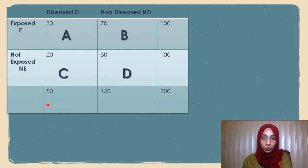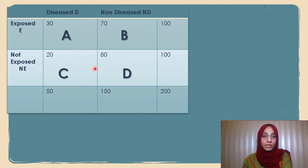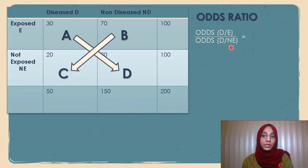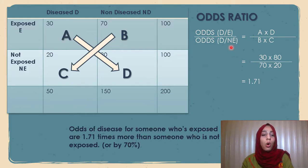Using the same 2x2 contingency table of 200 people, with disease status on top and exposure status on the left, and the four boxes designated A, B, C, and D, the odds ratio is calculated as the odds of developing disease when exposed divided by the odds when not exposed — or A times D divided by B times C. This is also known as the cross-product. Putting in the values, we get an odds ratio of 1.71, meaning the odds of disease for someone exposed are 1.7 times more than for someone not exposed.